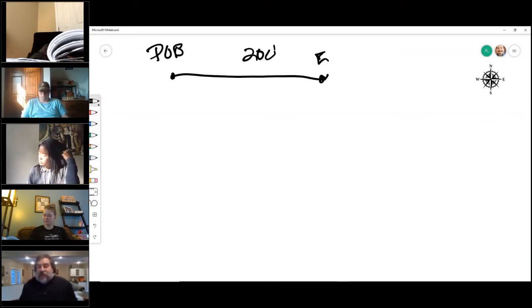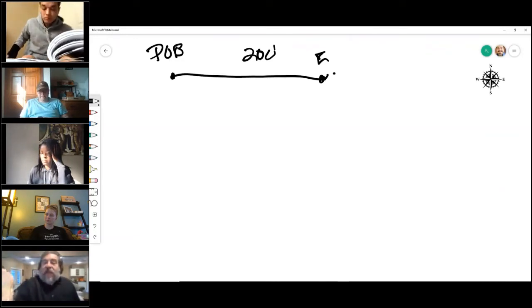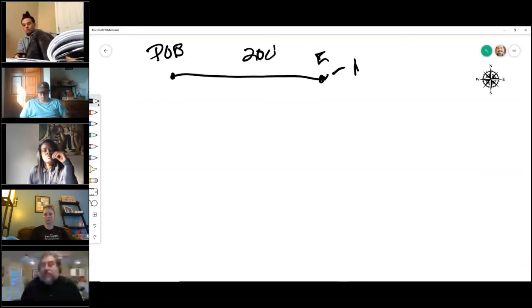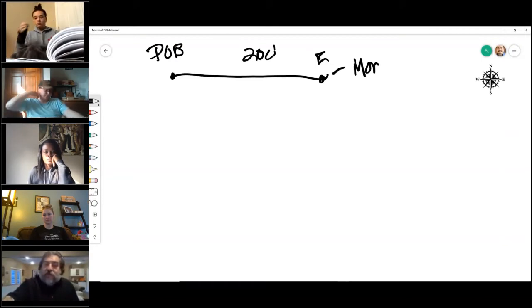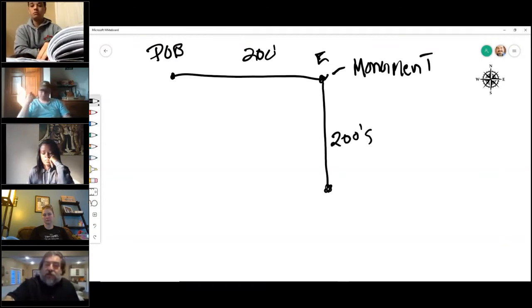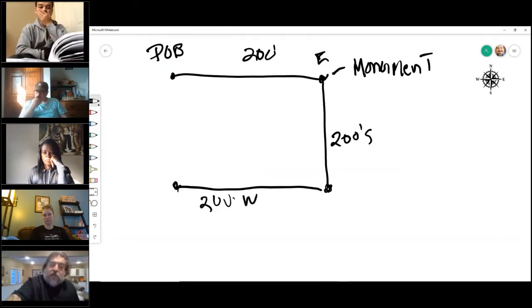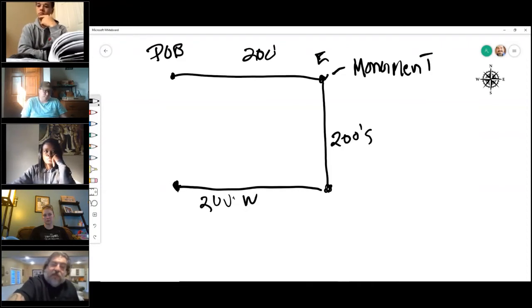It could also be a naturally occurring piece of real estate like the old oak tree or a body of water or something of that nature. So that monument is something here that describes the endpoint of that distance. And then it would simply say, and then 200 feet south to some other monument, 200 feet west to some other monument.